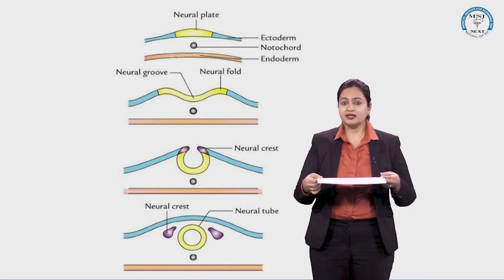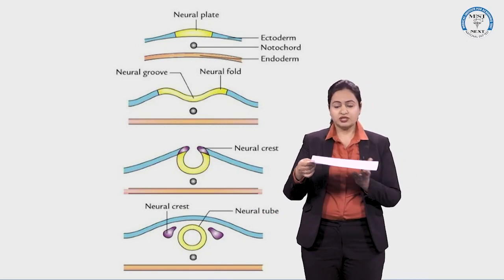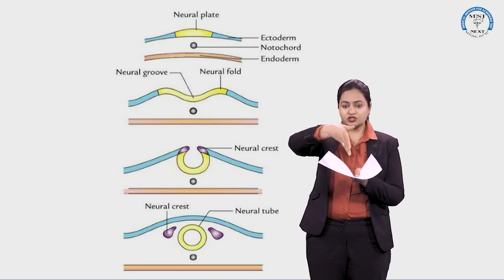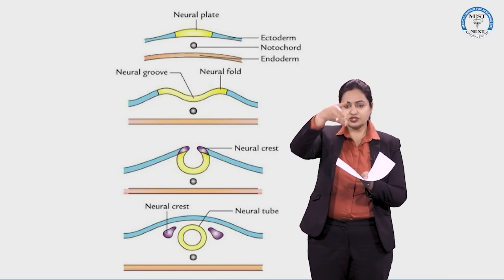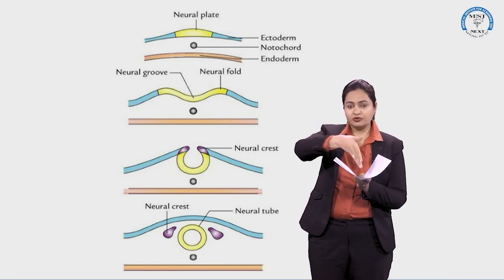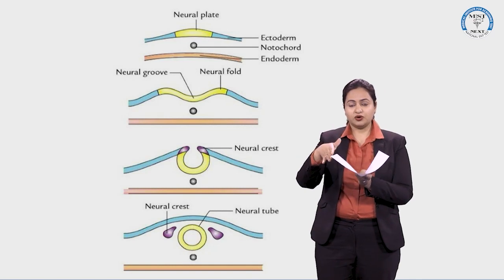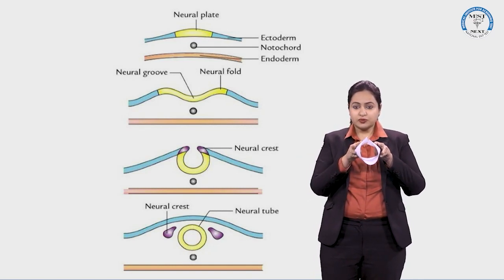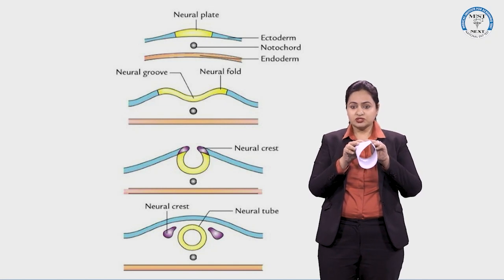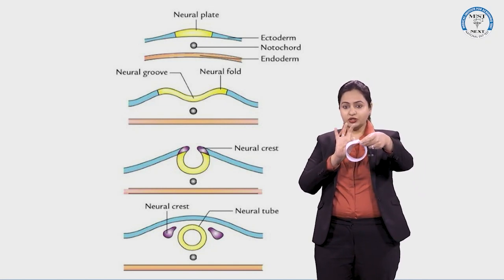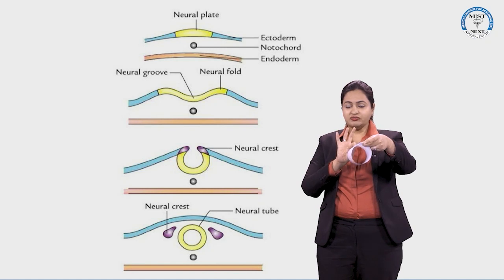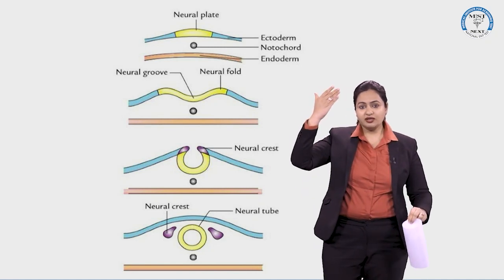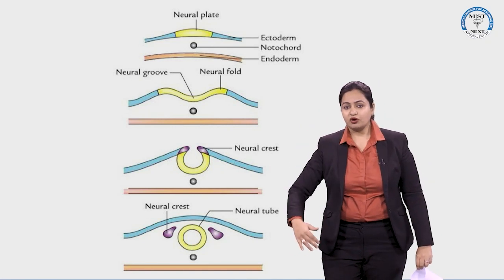To illustrate how the neural tube is formed: this is the neural plate, and the depression created in it is the neural groove. The folds arising on the sides are the neural folds. The neural folds slowly approximate each other and fuse to form the neural tube, which is a longitudinal structure extending from the cranial to the caudal aspect.